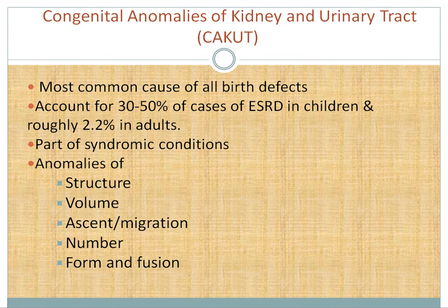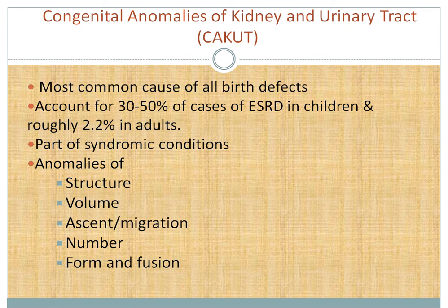Welcome back. In this video we will discuss congenital anomalies of the kidney and urinary tract, otherwise called CAKUT. These are the most common causes of birth defects, accounting for around 30 to 50% of cases of end-stage renal disease in kids, and they translate to about 2.2% in adults. They can be part of syndromic conditions.